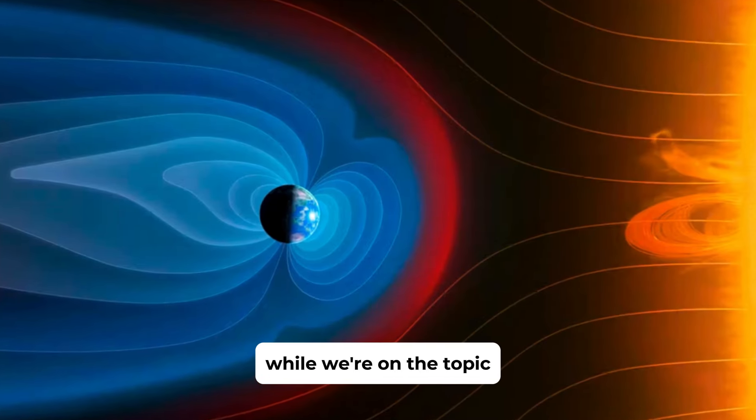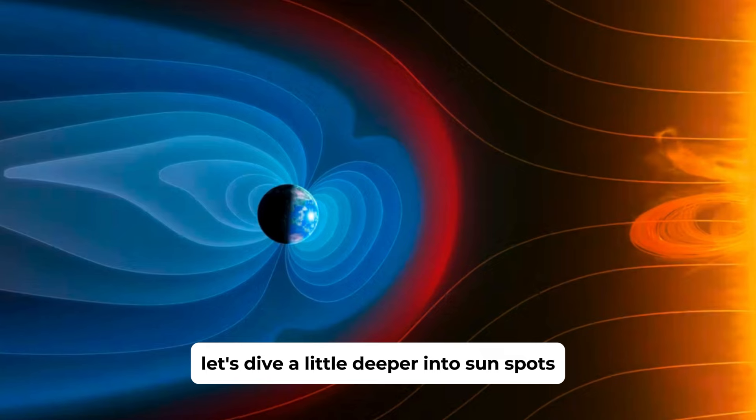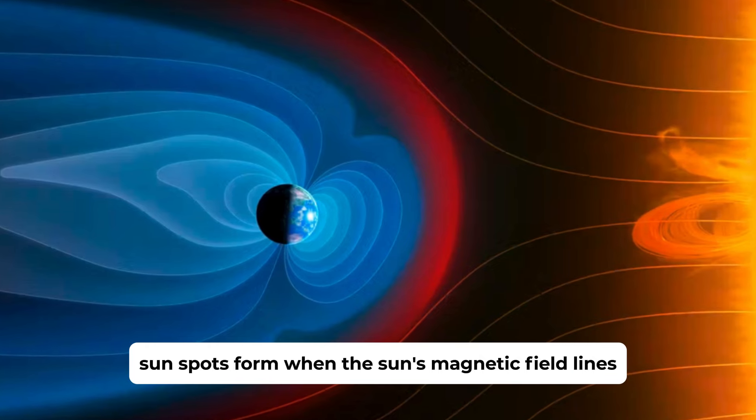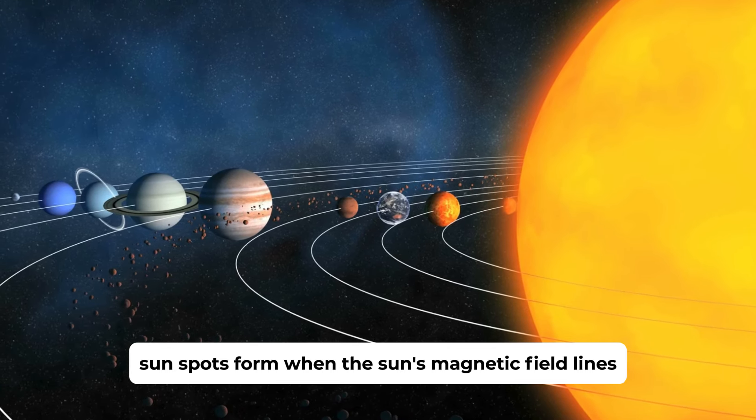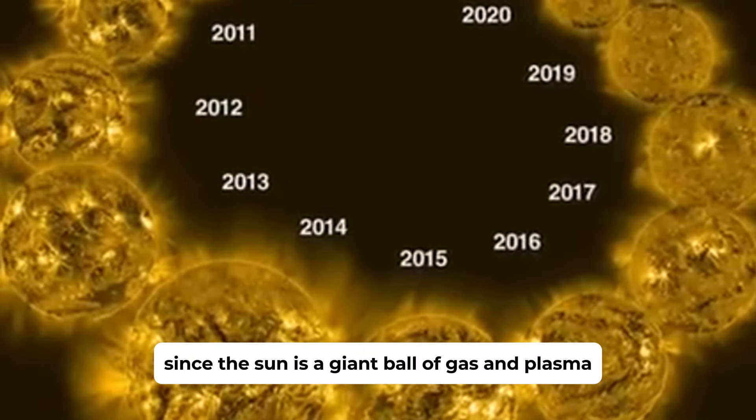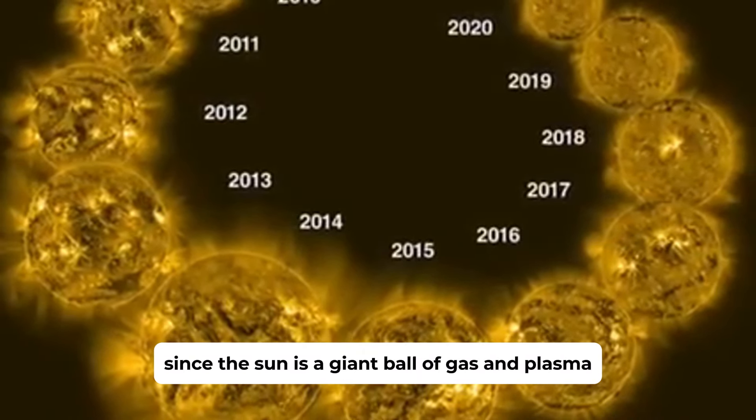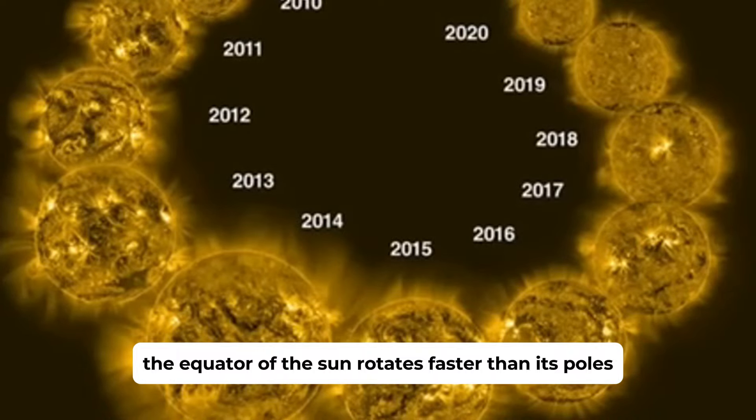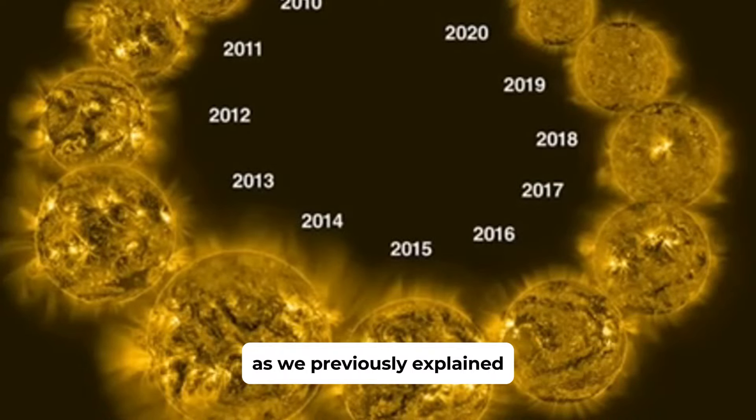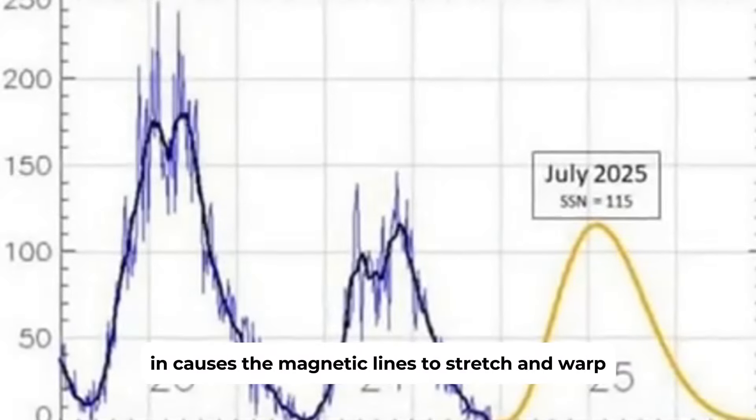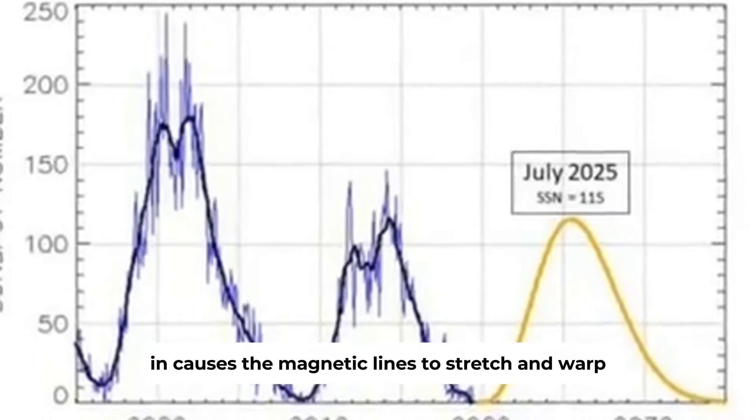While we're on the topic, let's dive a little deeper into sunspots. Sunspots form when the Sun's magnetic field lines become twisted and tangled due to differential rotation. Since the Sun is a giant ball of gas and plasma, the equator of the Sun rotates faster than its poles, as we previously explained, and causes the magnetic lines to stretch and warp.